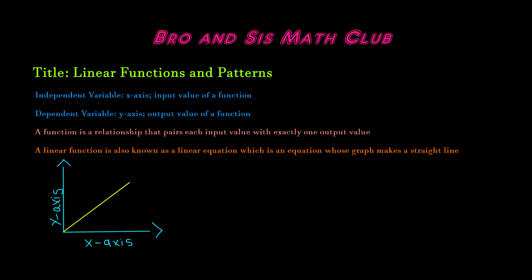An input value of a function is called an independent variable, which is always graphed on the x-axis. And the dependent variable is the output value of a function and it's always graphed on the y-axis.